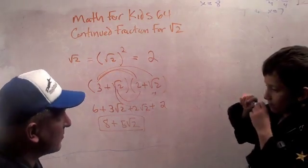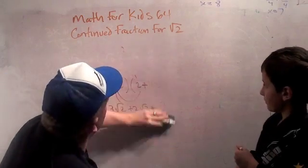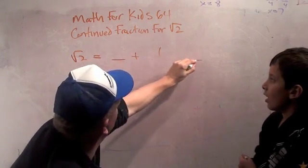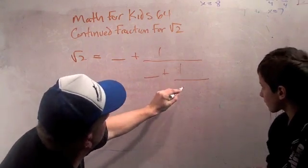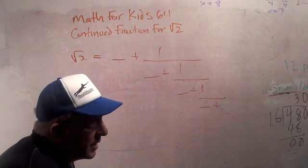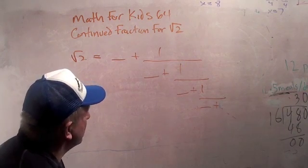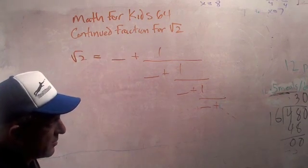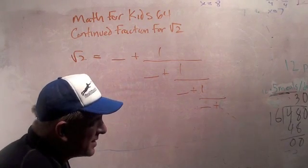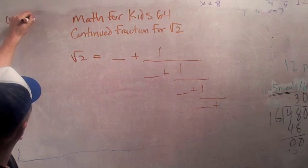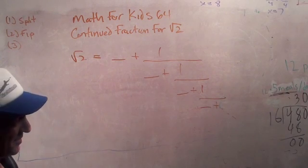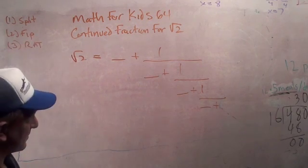Now we have the continued fraction. We're going to try to figure out the continued fraction for the square root of 2. We're looking for the square root of 2 to equal something plus 1 over something plus 1 over something plus 1 over something, all the way down — to infinity. We're going to use a procedure called split, flip, and rat. Rat means rationalize.